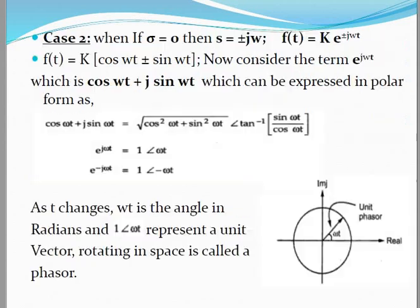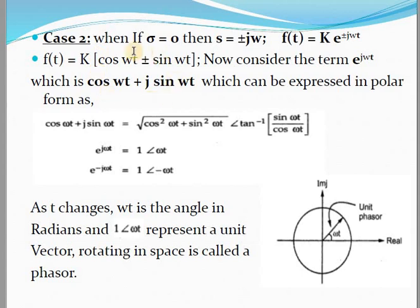In Case 2, when σ = 0 but ω exists in the circuit, s = +jω. So F(t) = k·e^(jωt), and we can represent e^(jωt) as cos(ωt) + j·sin(ωt). Therefore F(t) = k·[cos(ωt) + j·sin(ωt)]. This is the rectangular form, and we can represent it in polar form as r∠θ.